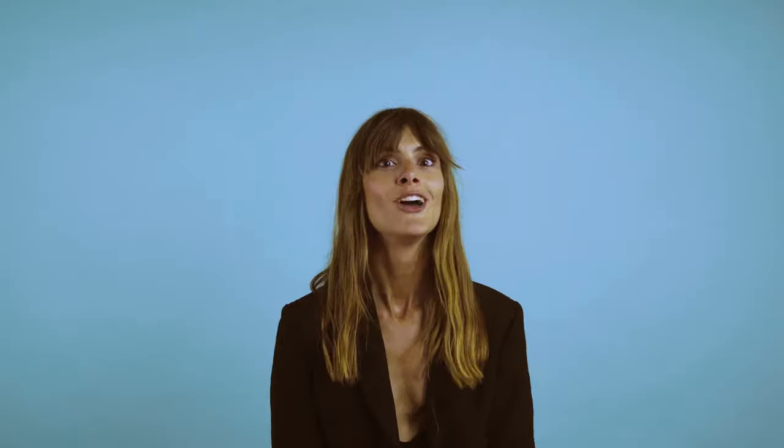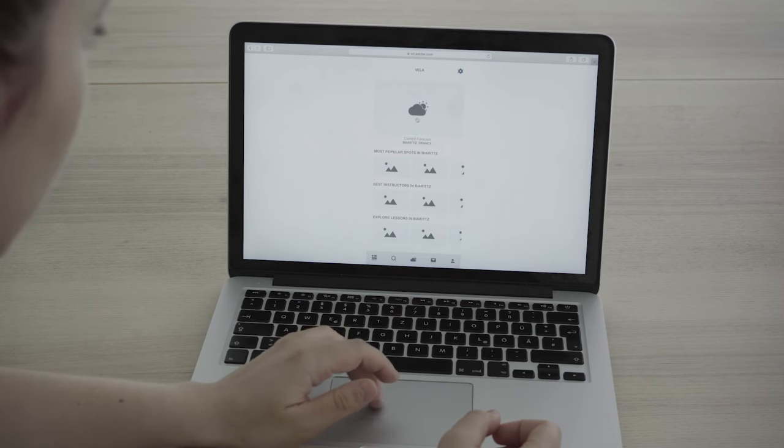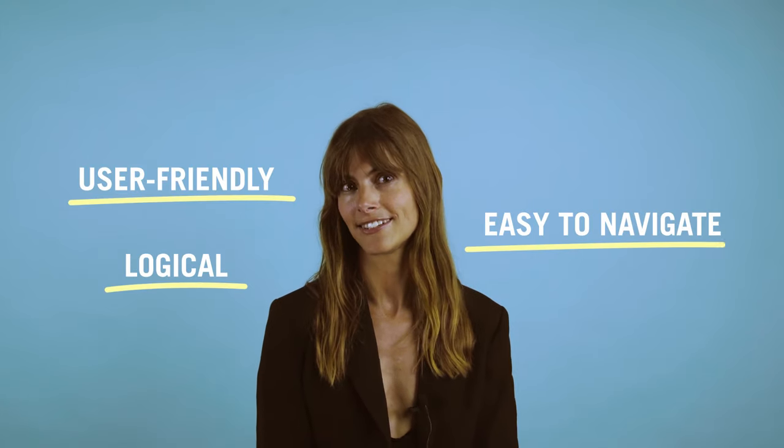Step 5: Create wireframes and conduct user testing. You've established what content needs to be included on your website, how it should be grouped and interlinked, and what each content group should be called. To round off the process, you'll create wireframes and conduct user testing. There are several methods you can use to test your information architecture, such as card sorting, tree testing, and click testing. By testing early and often, you will ensure that the final design is user-friendly, logical, and easy to navigate — all crucial components of good UX.